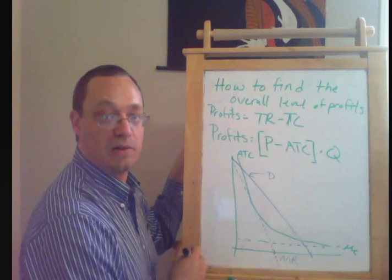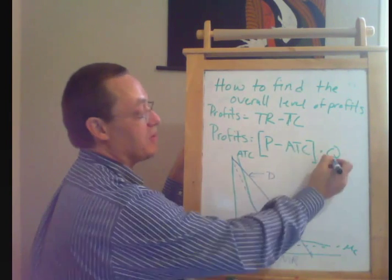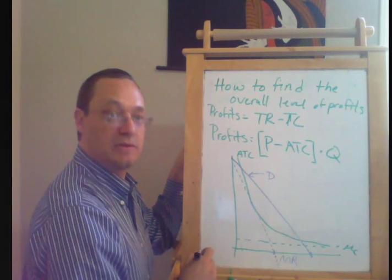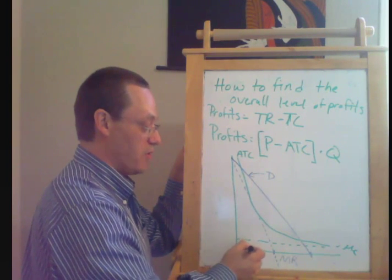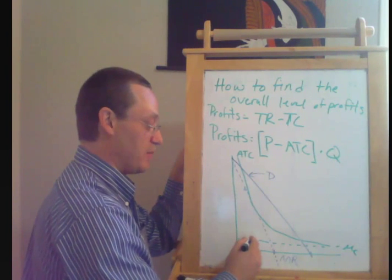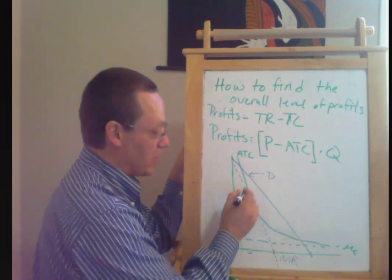And I know the blue is a little bit hard to see here. So we find the profit maximizing quantity by looking at where the marginal revenue curve hits the marginal cost curve. All the units over here have marginal revenue above their marginal cost. So all of those units have a positive marginal profit.